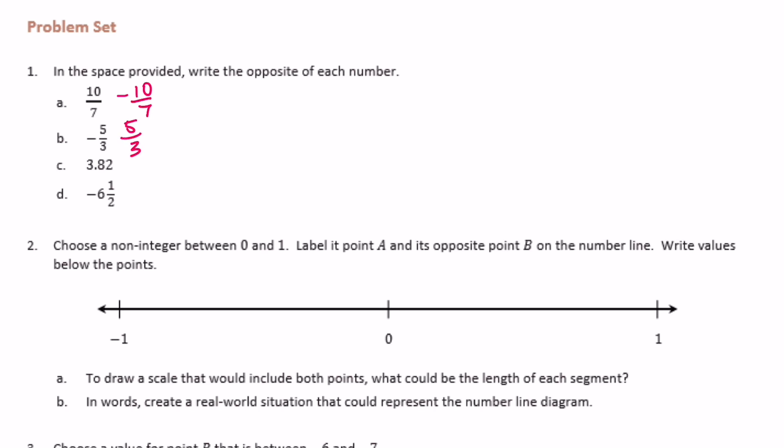3 and 82 hundredths — the opposite would be negative 3 and 82 hundredths. And negative 6 and a half — the opposite is positive 6 and a half.